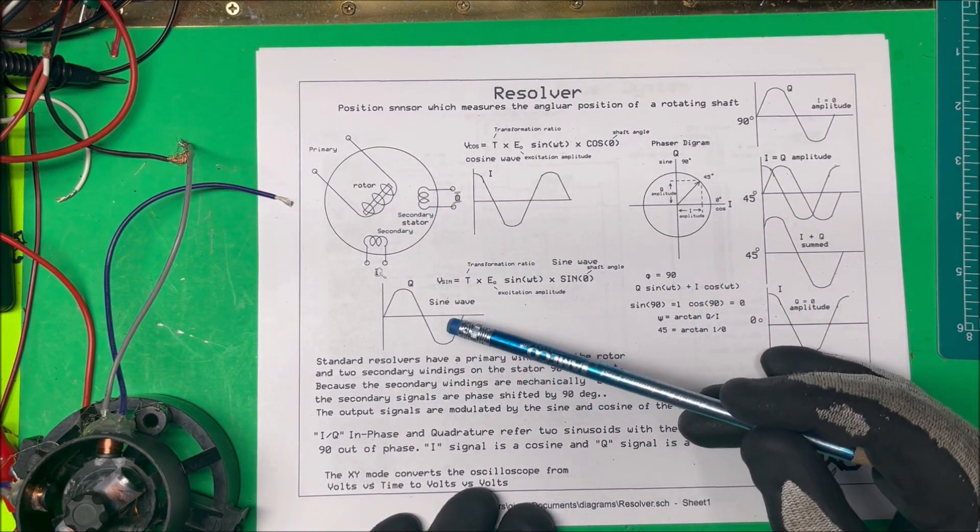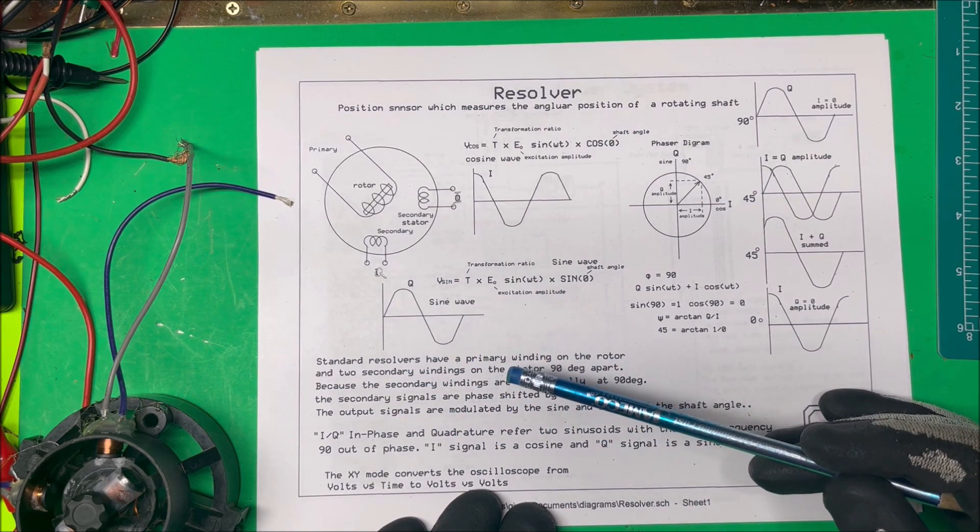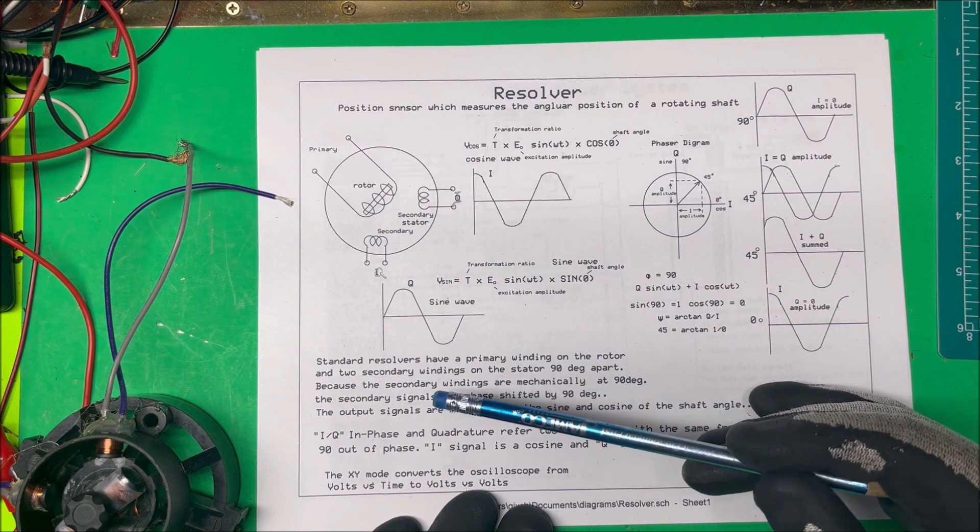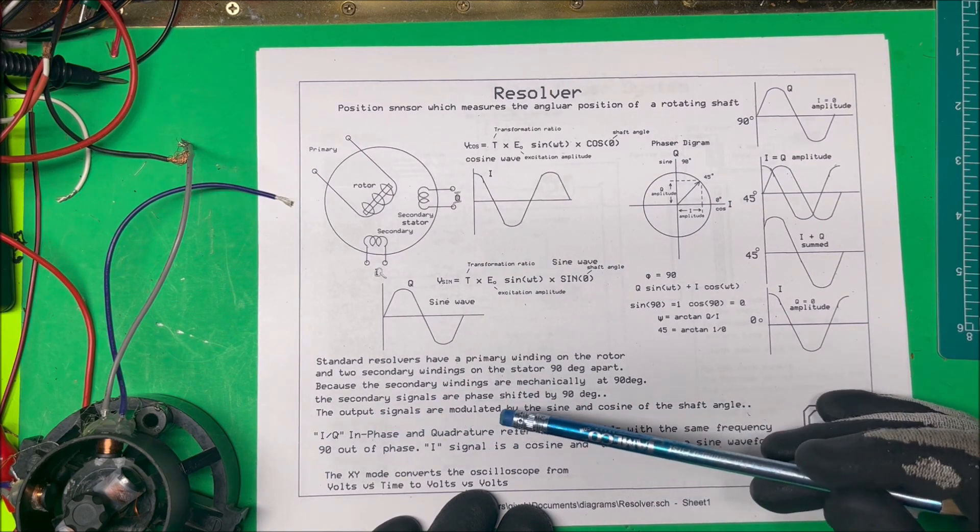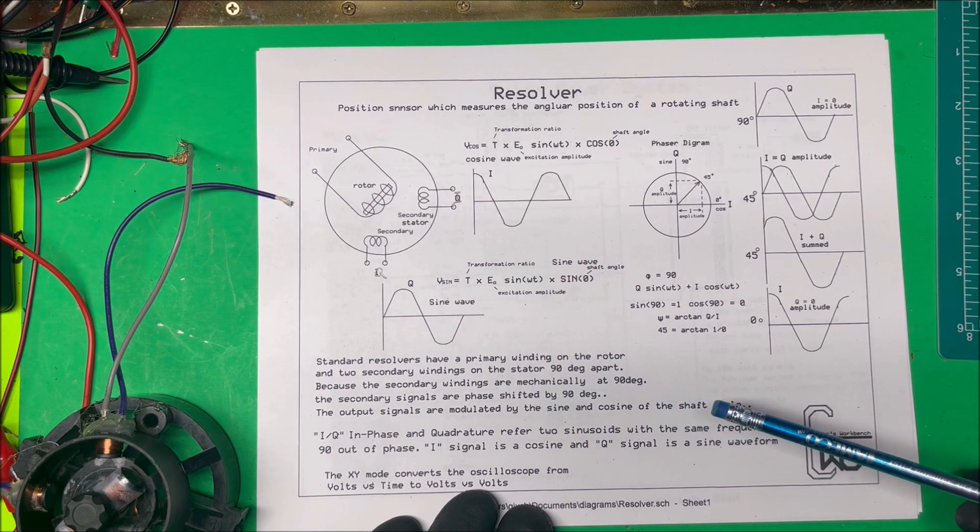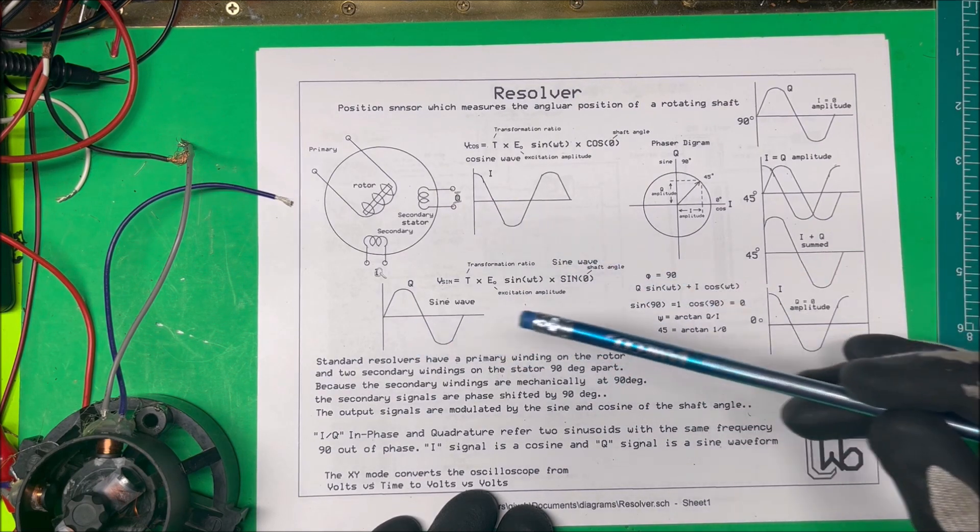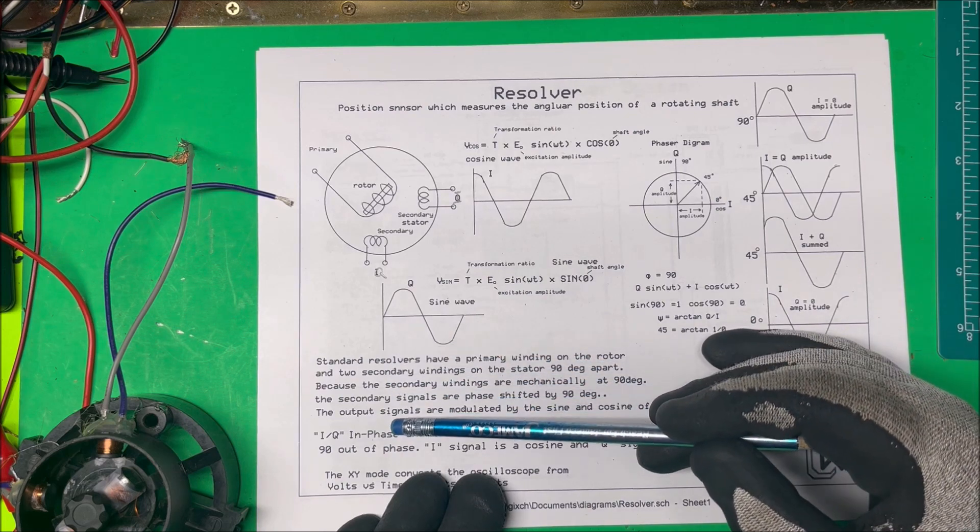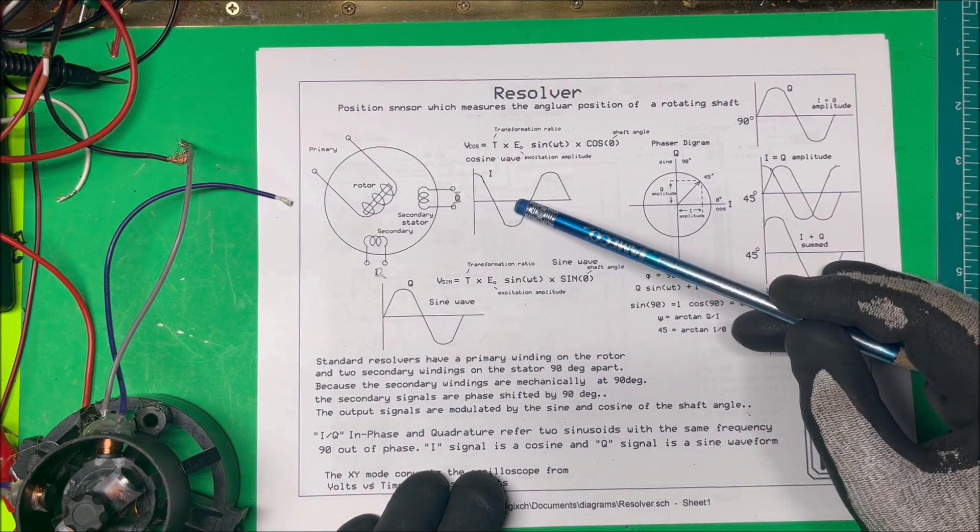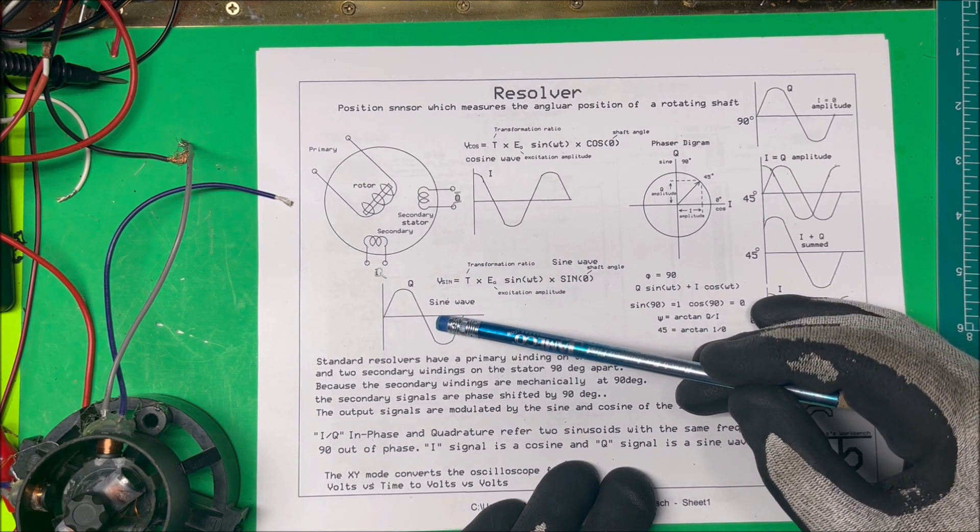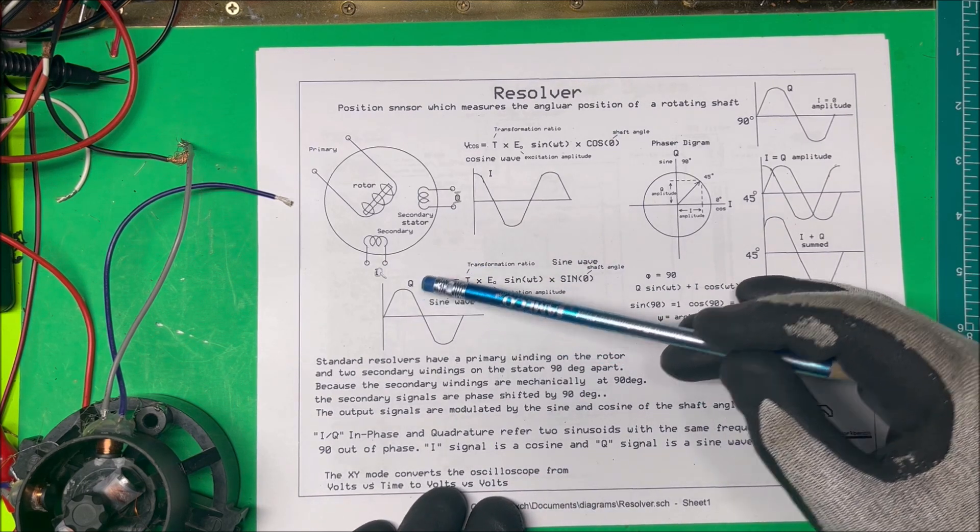Now in RF modulation we use IQ and it's in phase and quadrature and that refers to two sine waves with the same frequency 90 degrees at a phase and that's what we have here. So the I signal is your in phase and that's your cosine here. This is going to be in phase and your Q signal is your sine wave here. So I'm going to call this Q and this I.